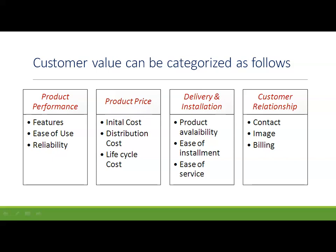The third customer value parameter is delivery and installation: availability of the product, ease of installment of the product or service, and ease of service. Delivery and installation mostly deals with the service factor. The last customer value category is customer relationship — the image of the particular brand in the customer's mind, the billing process and whether it is easy or not, and the point of contact to the company. These constitute customer relationship.